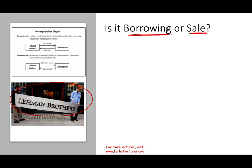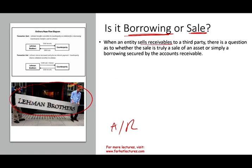To be more specific, let's talk about a receivable. A receivable is a financial asset — it's a financial security. So the question is: if we are going to get rid of it, if we're going to sell it to a third party, did we really sell it, or are we borrowing money against that receivable? When an entity sells a receivable to a third party, there's a question as to whether the sale is truly a sale or simply a borrowing arrangement secured by the account receivable.